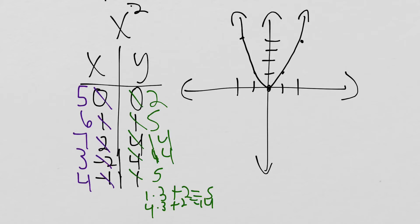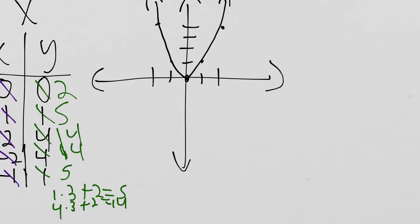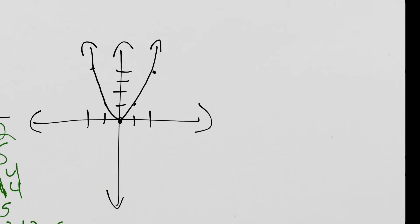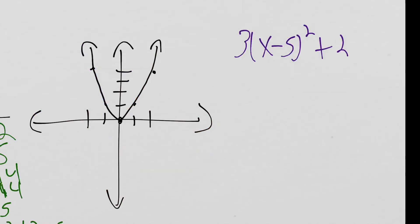There's an easier way to sketch this transformation rather than doing operations on every point. We have 3 times (x minus 5) squared plus 2. We know this function moves 5 to the right and 2 up, so an easy way is to take the vertex at (0,0) and move it 5 to the right and 2 up, which takes us to (5,2) for our new vertex.